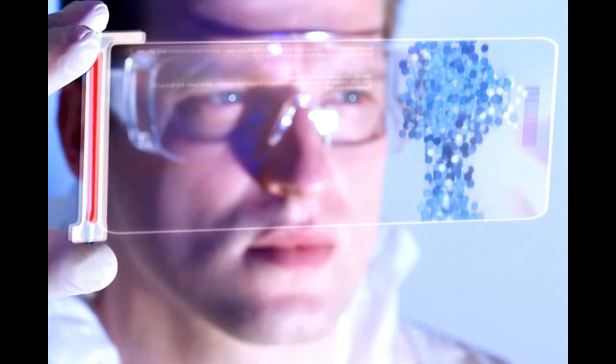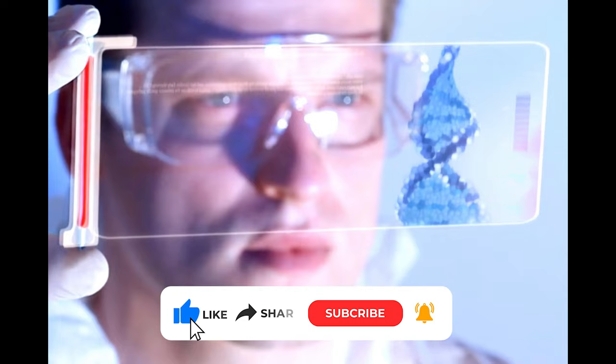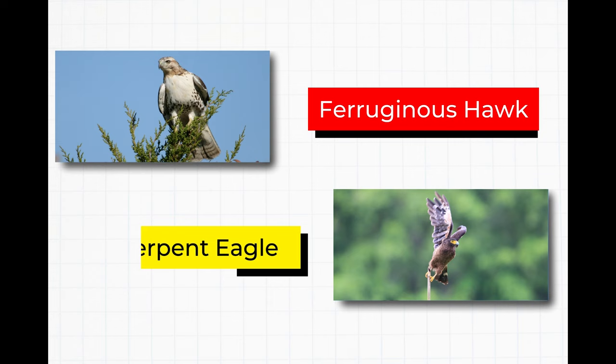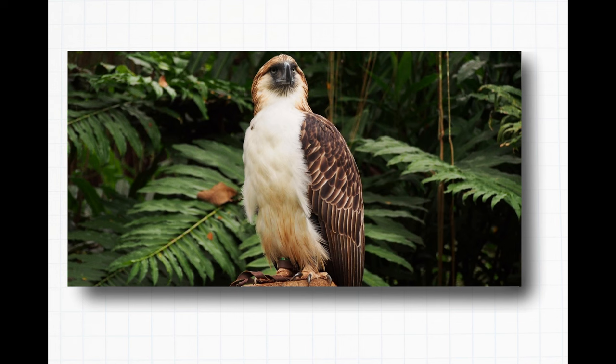Number one. In truth, most scientists differentiate between these two raptors based on their size. While some overlap exists, with large hawks measuring larger than small eagles, eagles usually represent the larger species.